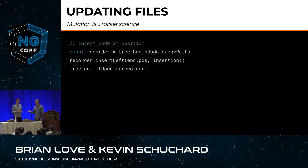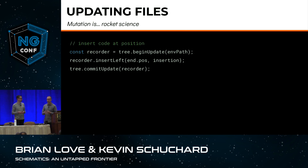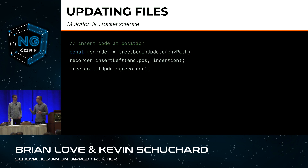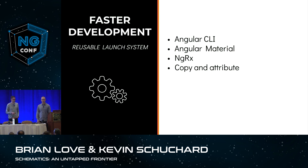Now that we have the position, we access a method called beginUpdate, input our starting position, add our insertion, and then commit the update. It's also important to note that the tree in schematics allows us to make changes in a transactional way — we don't have to add any sort of undo logic. If something happens along the way, we don't have to back out and fix it. We don't want to start modifying the file system and then halfway through have a problem we can't recover from. That is one of the really great advantages of using schematics.